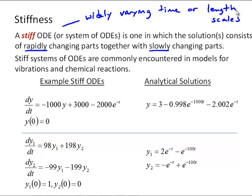Stiff systems of ODEs are commonly encountered in models for vibrations and chemical reactions. In fact, the term stiffness comes from vibration models with large spring constants. When you have large spring constants, or a stiff spring, you end up with a stiff system of differential equations in a vibration model.